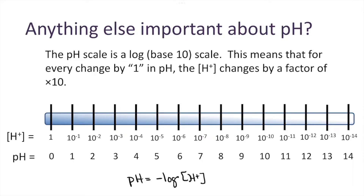As our hydrogen ion concentration decreases, the pH of our solution increases. For example, a hydrogen ion concentration of 10 to the negative second molar gives a pH of 2, while a concentration of 10 to the negative seventh molar gives a pH of 7. As that hydrogen ion concentration decreases, our pH increases.